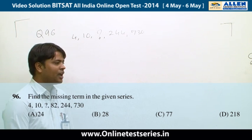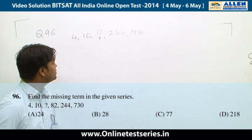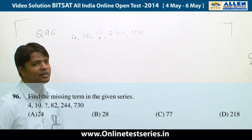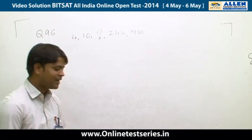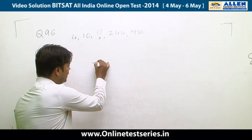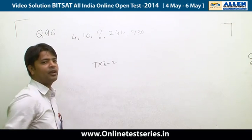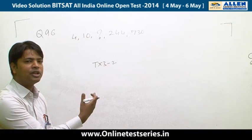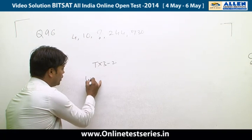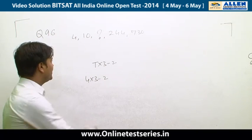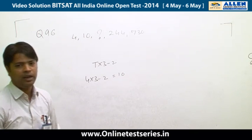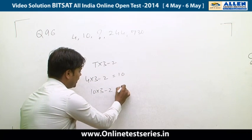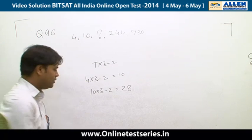Question 96 is from series. If you observe this question, the series follows the format t×3−2, meaning multiply a term by 3 and subtract 2 to get the next term. For example, 4×3−2 gives 10. Then 10×3−2 gives 28, so the answer is 28, option B.